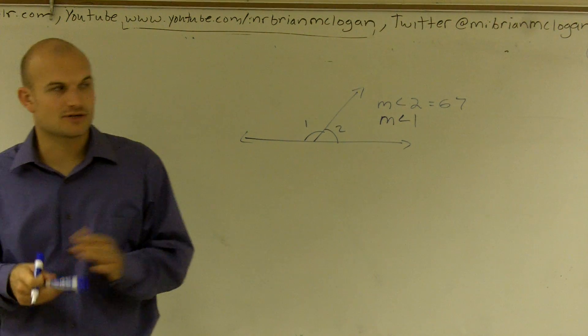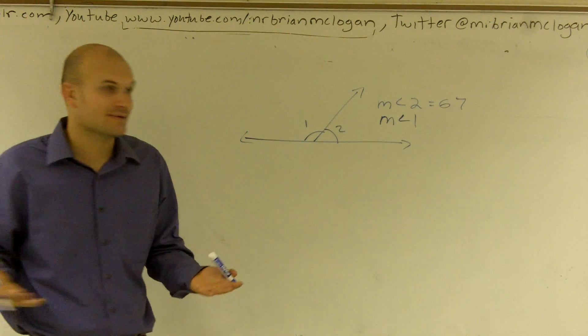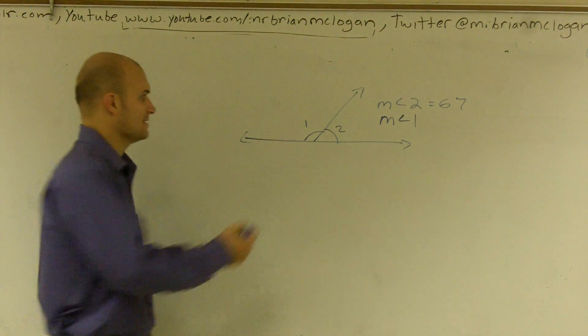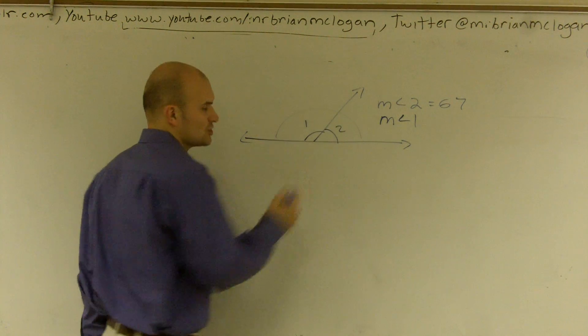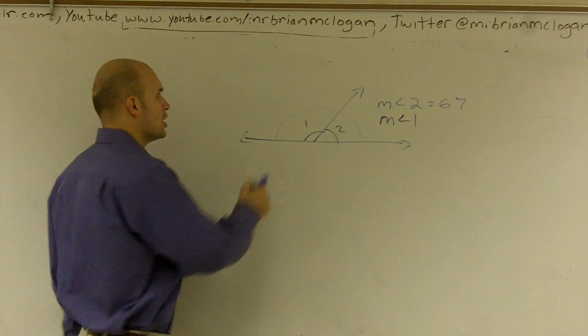What a linear pair means is you're going to have two angles that are going to add up to make you a line. And the angle of a line, this whole straight line we'll call a straight angle, is 180 degrees.